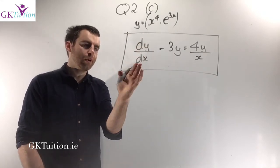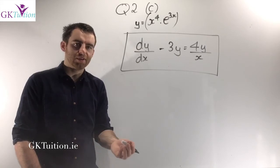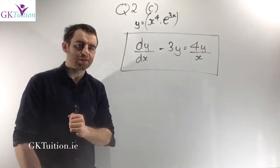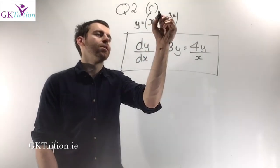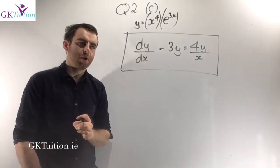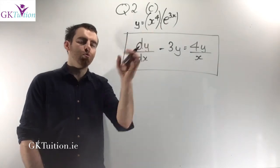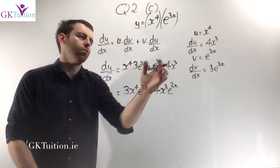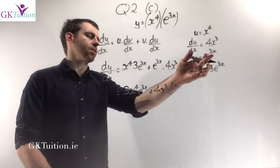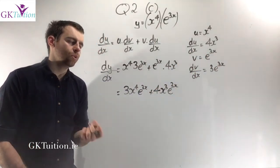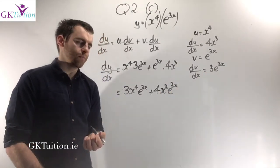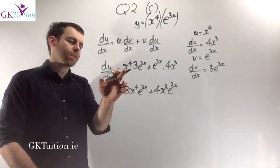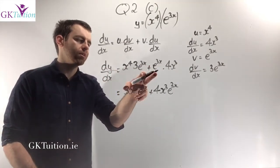Since y equals x to the power of 4 times e to the 3x is one variable multiplied by another, use the product rule. u equals x to the power of 4, so du dx equals 4x cubed. v equals e to the 3x, so dv dx equals e to the 3x multiplied by 3, the derivative of the power. Using the product rule, dy dx equals x to the power of 4 times 3e to the 3x plus e to the 3x times 4x cubed, which we can rewrite in a structured form as 3x to the power of 4 e to the 3x plus 4x cubed e to the 3x.